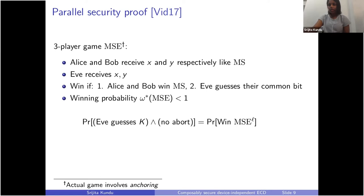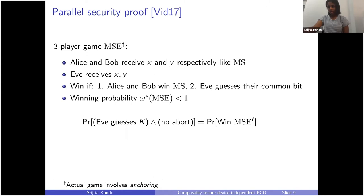It can be shown that the winning probability of this three-player version of the magic square game is less than one, which follows from self-testing properties. The probability that Eve guesses K and there is no abort — since the abort condition depends on Alice and Bob winning the magic square game — is equal to the probability that Alice, Bob, and Eve win L parallel copies of this game MSE. By the parallel repetition theorem for anchored games, we can show that this probability is exponentially smaller in L.